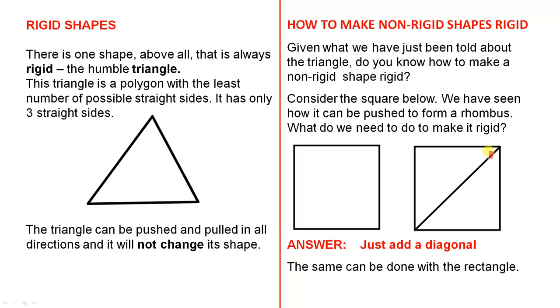So you see here, by adding this diagonal, what have we formed? We formed two triangles. One there and this one here. So no matter what you do, you can push and pull this thing anywhere and it will not change shape. Because now it's made up of two triangles.